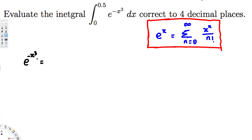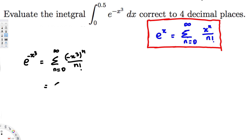We use summation notation with n going from 0 to infinity. Instead of x, we plug in negative x cubed, so this becomes negative x cubed to the power of n over n factorial. We can separate out the negative 1, giving us the summation from n=0 to infinity of negative 1 to the power n, times x to the power 3n, over n factorial.